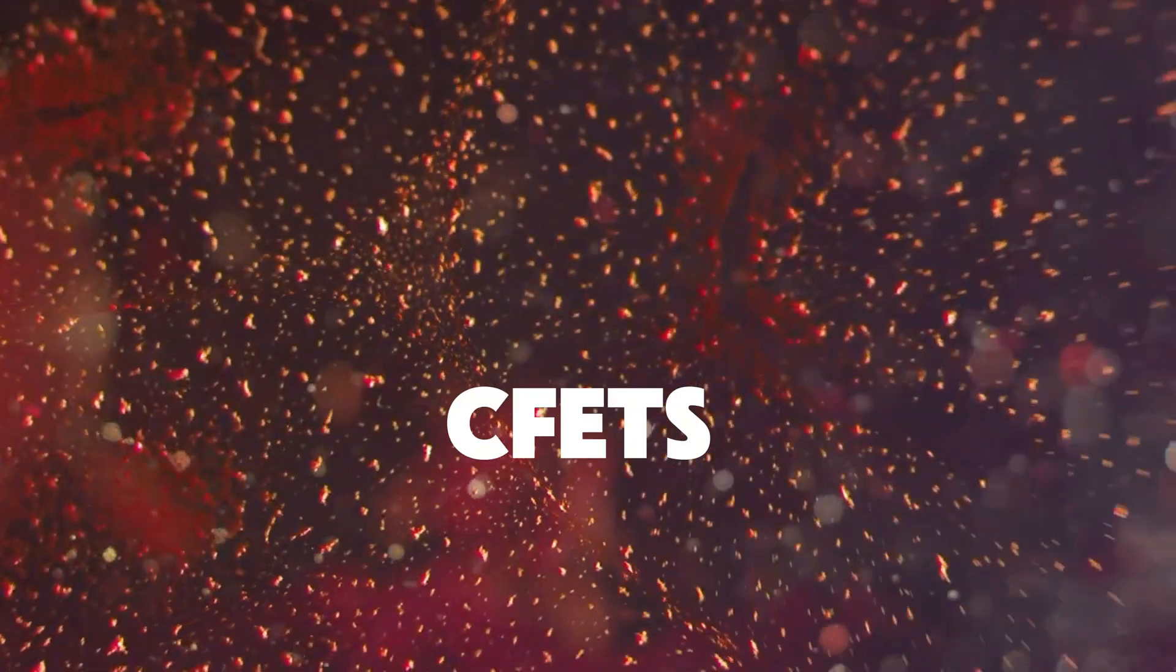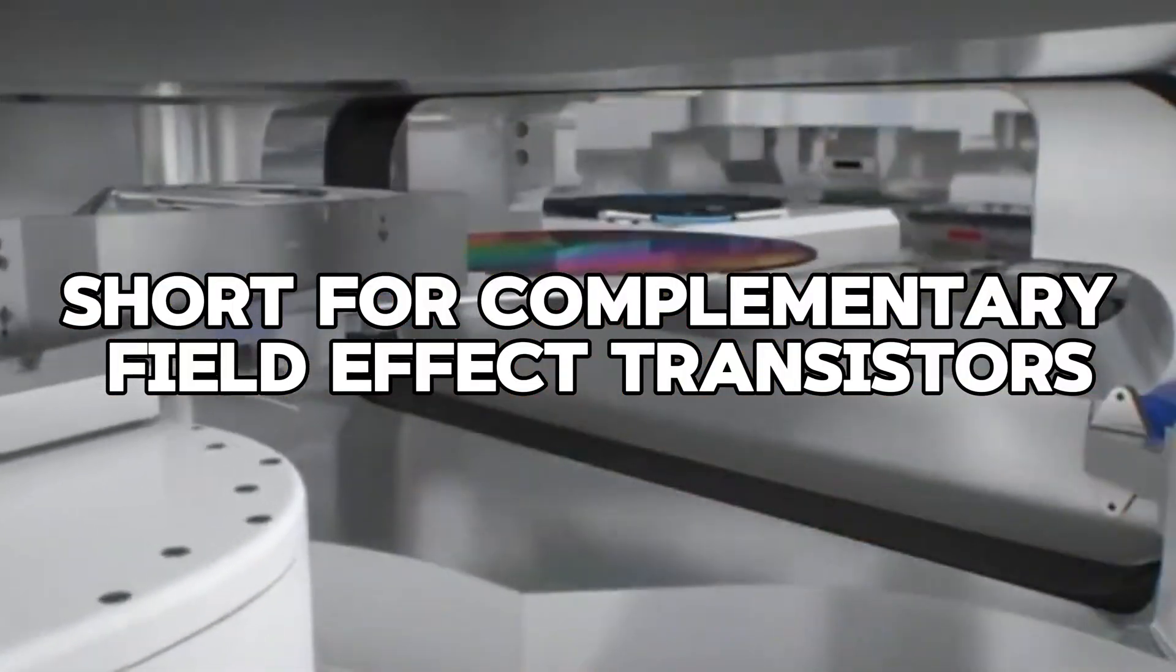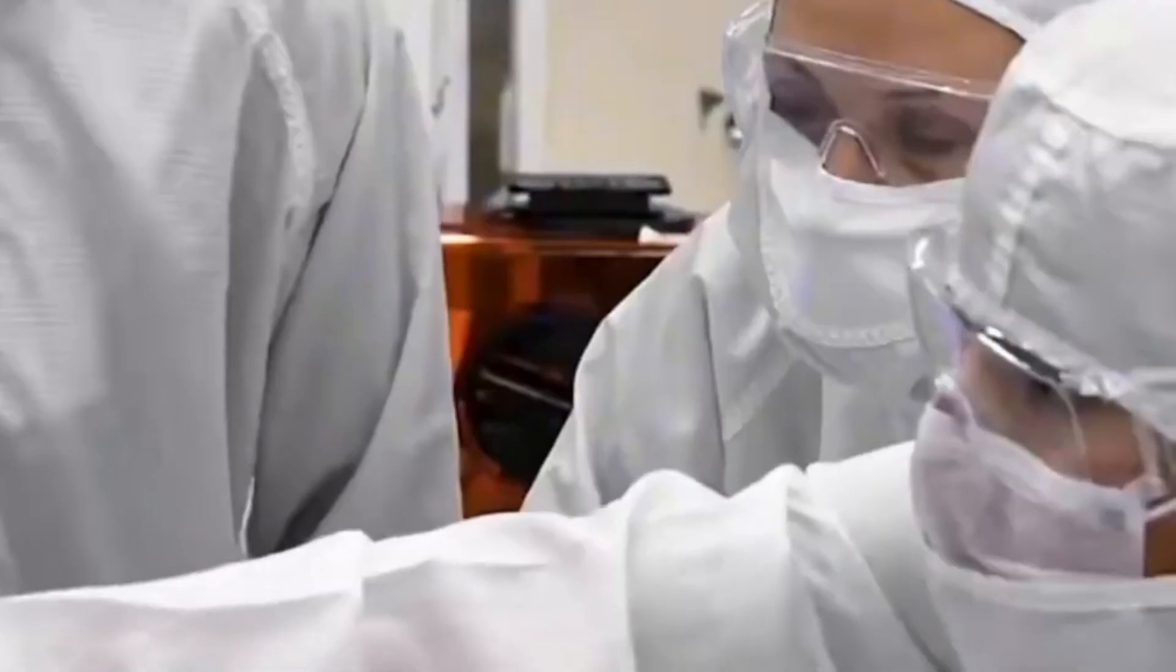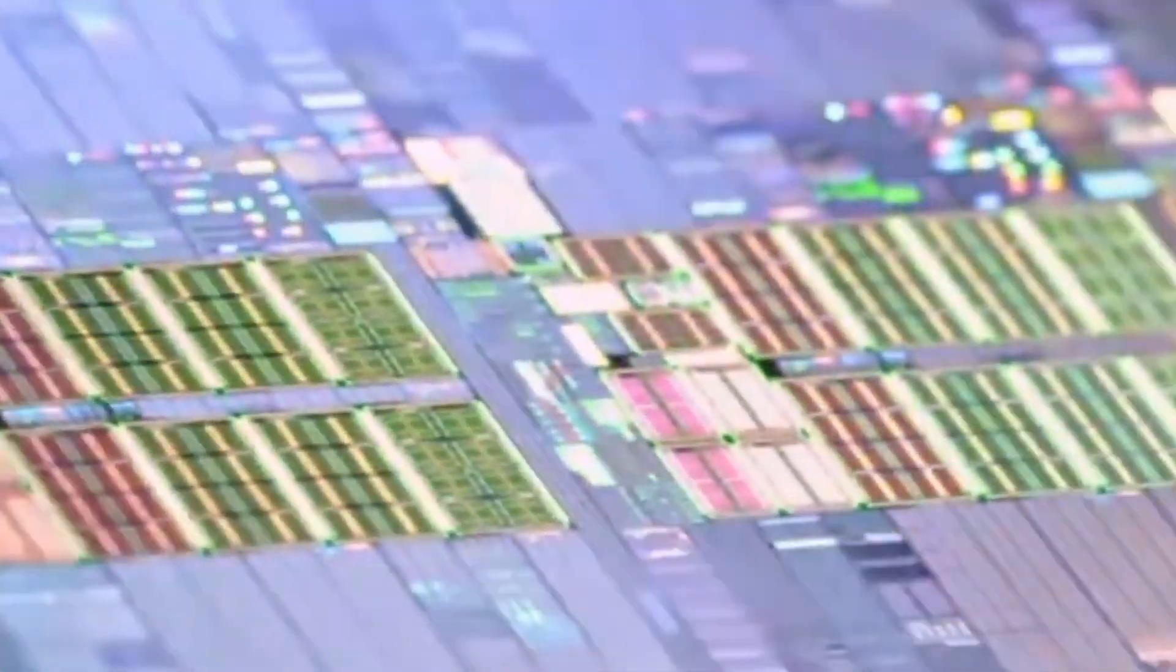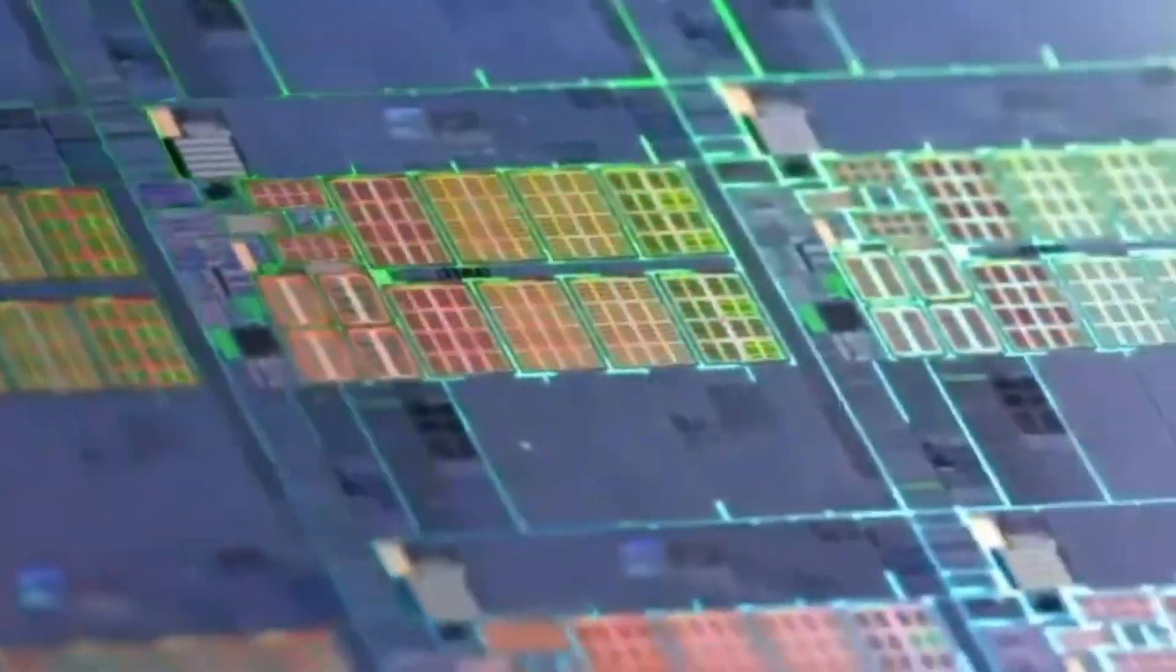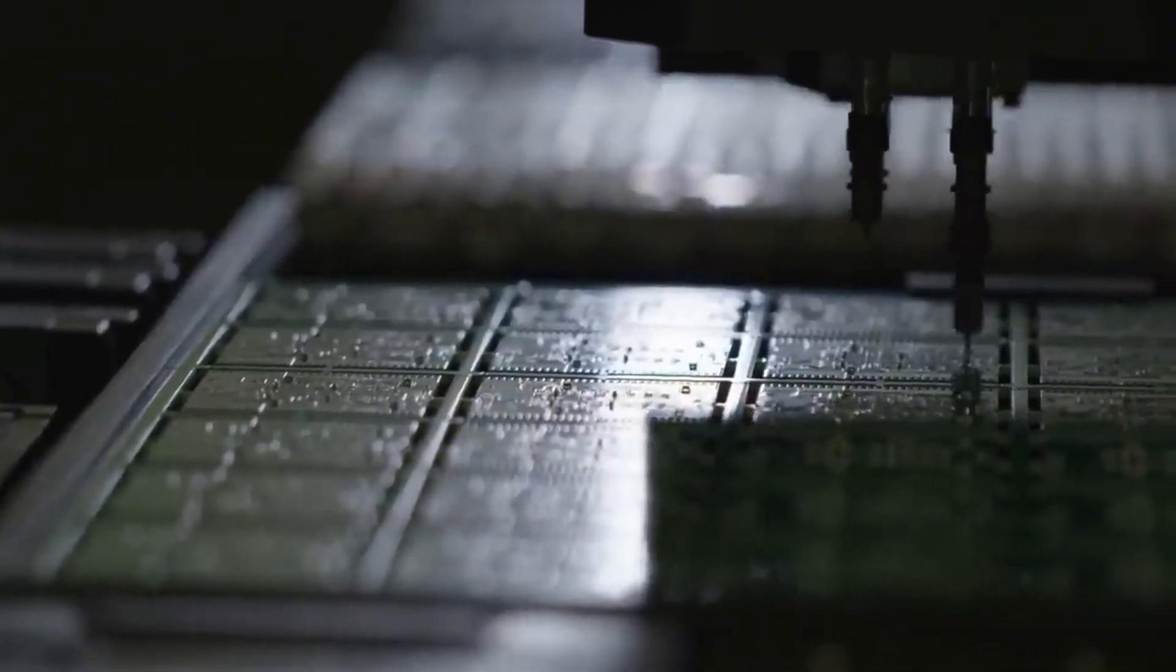We need to build upward. Enter CFETs, short for complementary field-effect transistors. These take the current nanosheet transistor and stack it vertically, like building skyscrapers instead of expanding a city outward. This vertical stacking saves space, boosts performance, and allows us to continue shrinking chips well into the Angstrom era. That's a scale even smaller than nanometers.